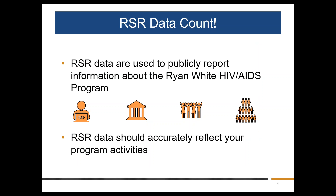Let's start by discussing why we care about RSR data quality and completeness. RSR data are used to publicly represent the Ryan White HIV AIDS program. You want your RSR data to reflect the good work that you do, because your project officer and HAB leadership are going to review RSR data to learn more about the services you provide. It's also essential that Congress, the HIV community, and the public at large receive accurate information. Good quality data can help you improve quality of care, but poor quality data cannot. If your data don't reflect your actual program activities, you can't use it to improve your performance.